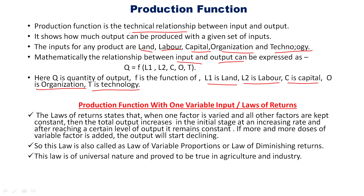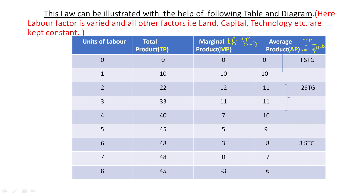In the initial stage, when one factor is varied and all others are kept constant, the total output increases. This is the definition of law of returns. Initially, the rate of increase in production will be high, and after reaching a certain level of output, it remains constant. If more and more doses of variable factors are added, the output will start declining. This is the basic essence of the law of returns, also called law of variable proportions or diminishing returns to scale. This law is universal in nature and true in both agricultural and industrial sectors.